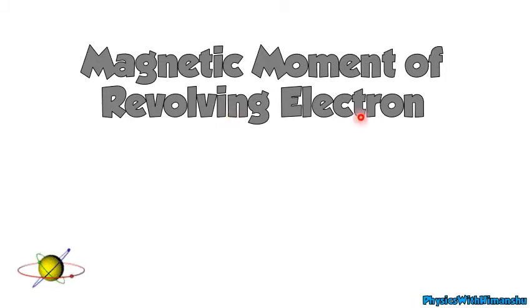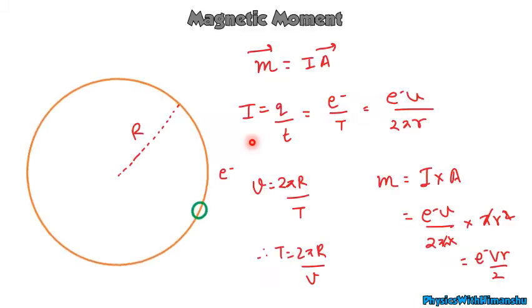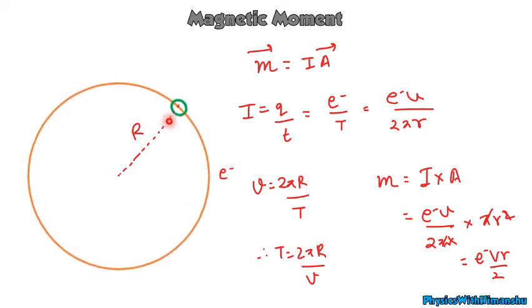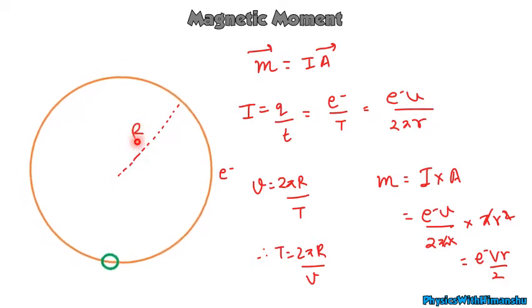Suppose an electron is revolving in an atom in a circle of radius r with velocity v.